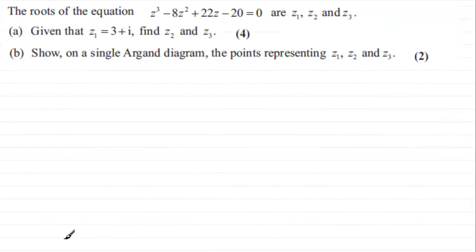Hi. What we have here is that the roots of the equation z cubed minus 8z squared plus 22z minus 20 equals 0 are z1, z2 and z3. And in part a we're given that z1 equals 3 plus i. And what we've got to do is find z2 and z3.